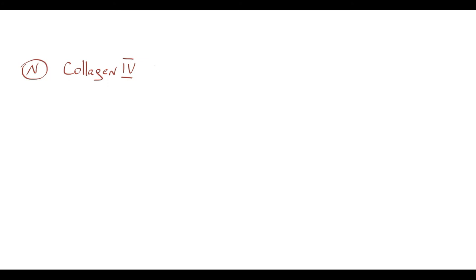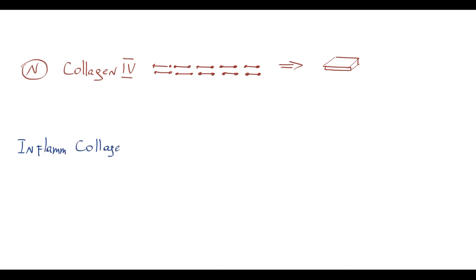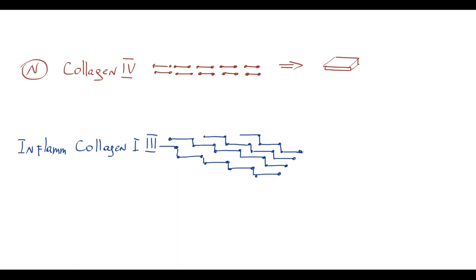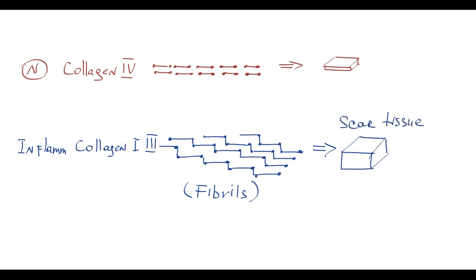Recall that normal connective tissue matrix is composed of collagen type 4, which is a non-fibril-forming type of collagen, and collagen type 4 molecules are linked to each other by head-to-head connections, resulting in a very thin and soft structure. In contrast, during inflammation, instead of collagen type 4, hepatic stellate cells secrete collagen type 1 and 3, which are fibril-forming types of collagen. These collagen molecules are connected in parallel fashion, forming assemblies called fibrils. This results in a very dense, thick extracellular matrix structure — basically, it's scar tissue — which leads to tissue stiffening and loss of organ function.